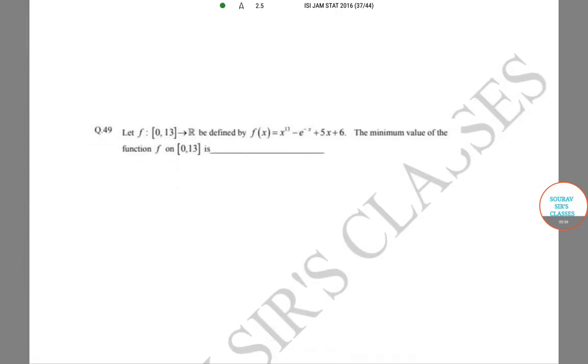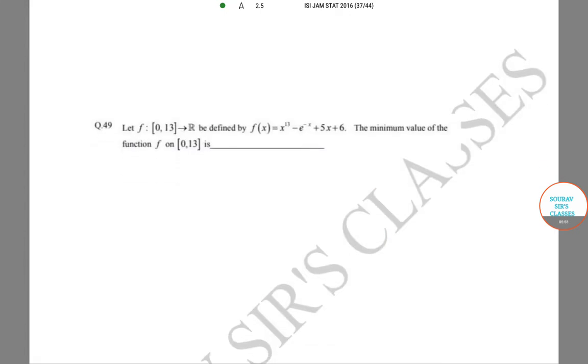Which is: let f from [0,13] to R be defined by f(x) = x¹³ + e⁻ˣ + 5x + 6. The minimum value of the function f on [0,13]...